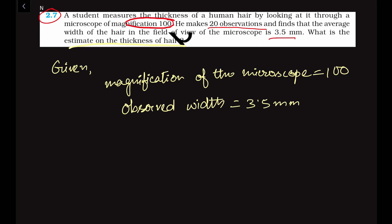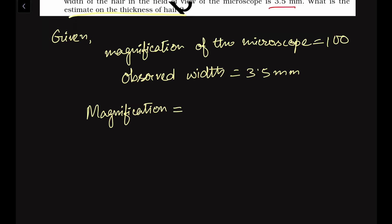Magnification is equal to observed width divided by the real width. We have magnified, therefore we can write like this: whatever be the magnification factor, that will be equal to the observed width divided by the real width. So from here we can find out the real width.